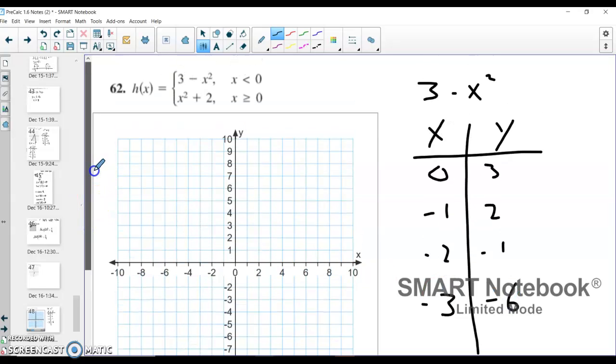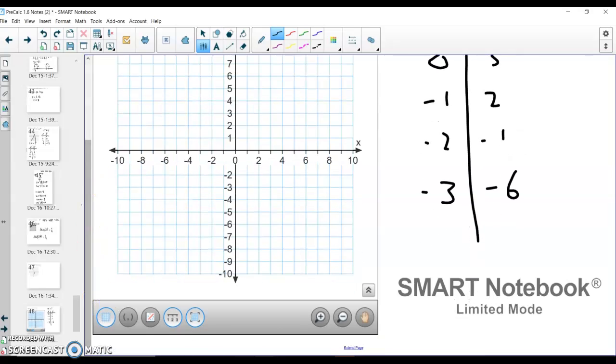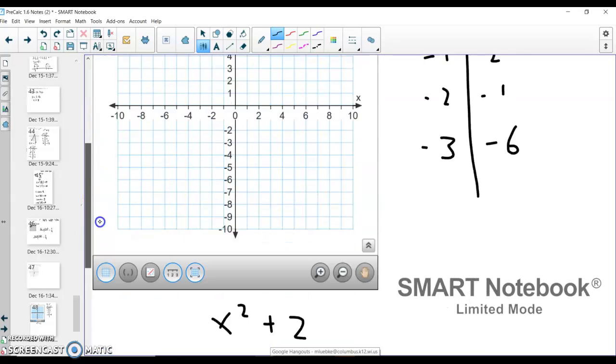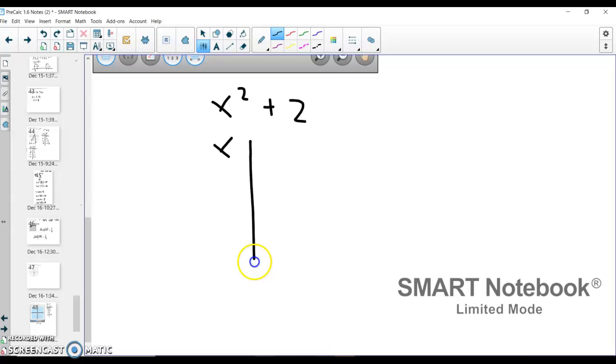Xy table for the second function, which is x squared plus 2. And so extending my page, I got x squared plus 2, making sure that that's right. Yep. And I got my xy table for this one.